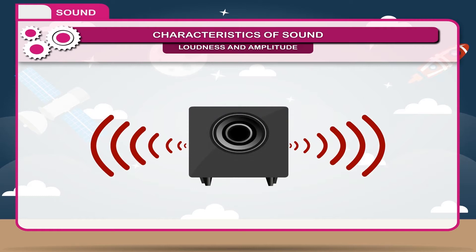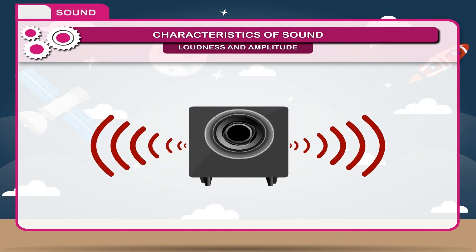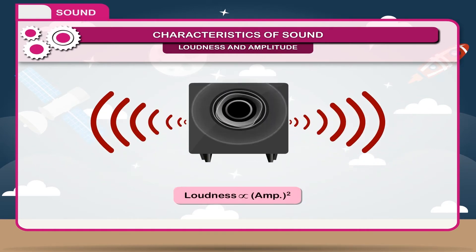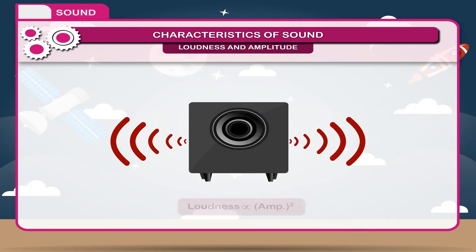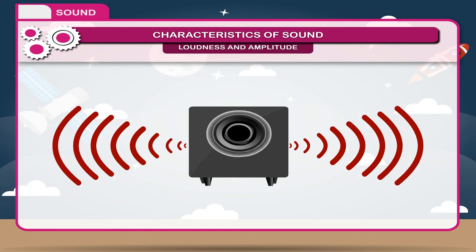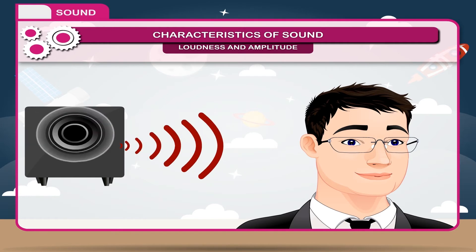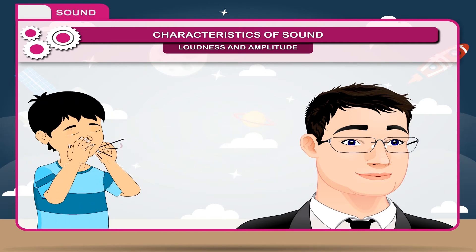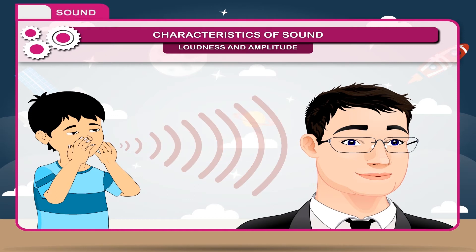Loudness and amplitude. The loudness of sound is determined by the amplitude of vibration. It is directly proportional to the square of the amplitude of vibration. This means if the amplitude is increased twice, the loudness will also increase four times. Amplitude is the degree of disturbance produced in the air. The sensation produced in the air which enables us to distinguish between a loud and a soft sound is called loudness.